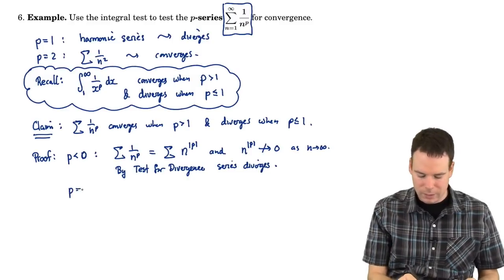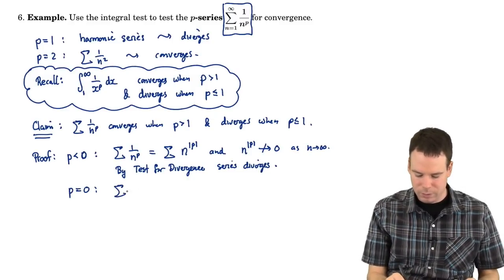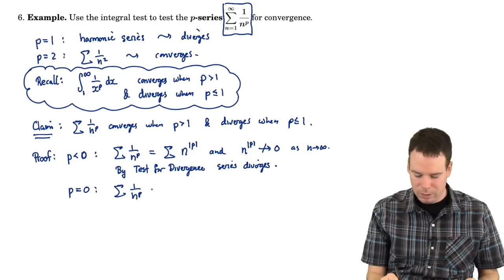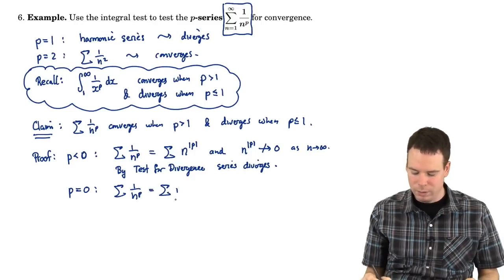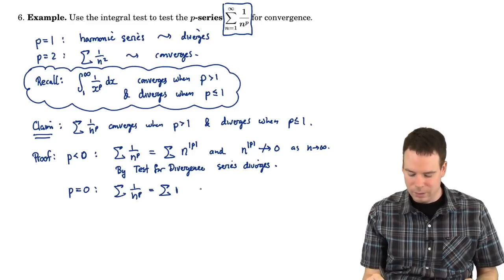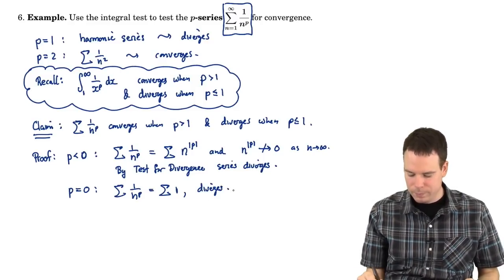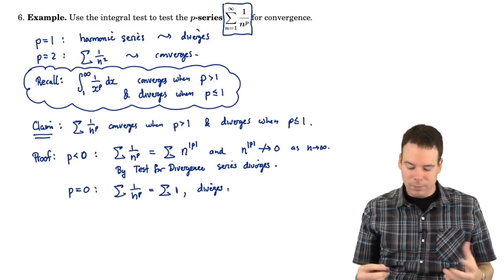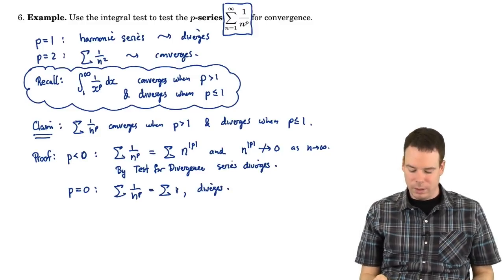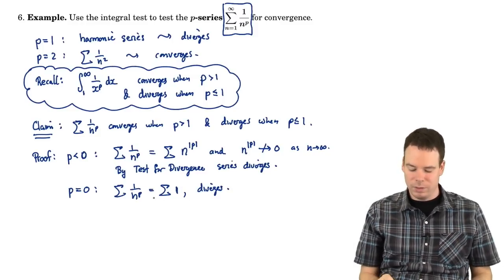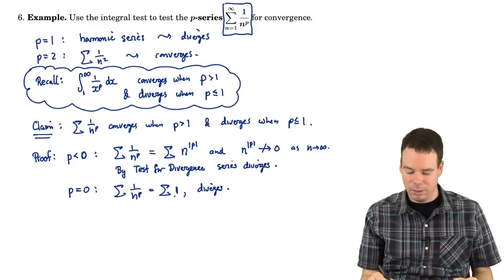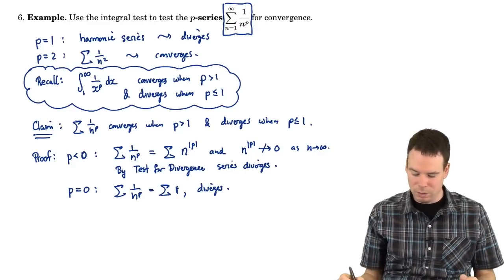What about if p is equal to 0? Well if p is equal to 0, 1 over n to the p is equal to just the sum of 1's. And again that diverges. Again for the test for divergence, the terms don't go to 0. They stay at 1. So we're just adding up infinitely many 1's and that's going to be divergent. It's going to go off to infinity.